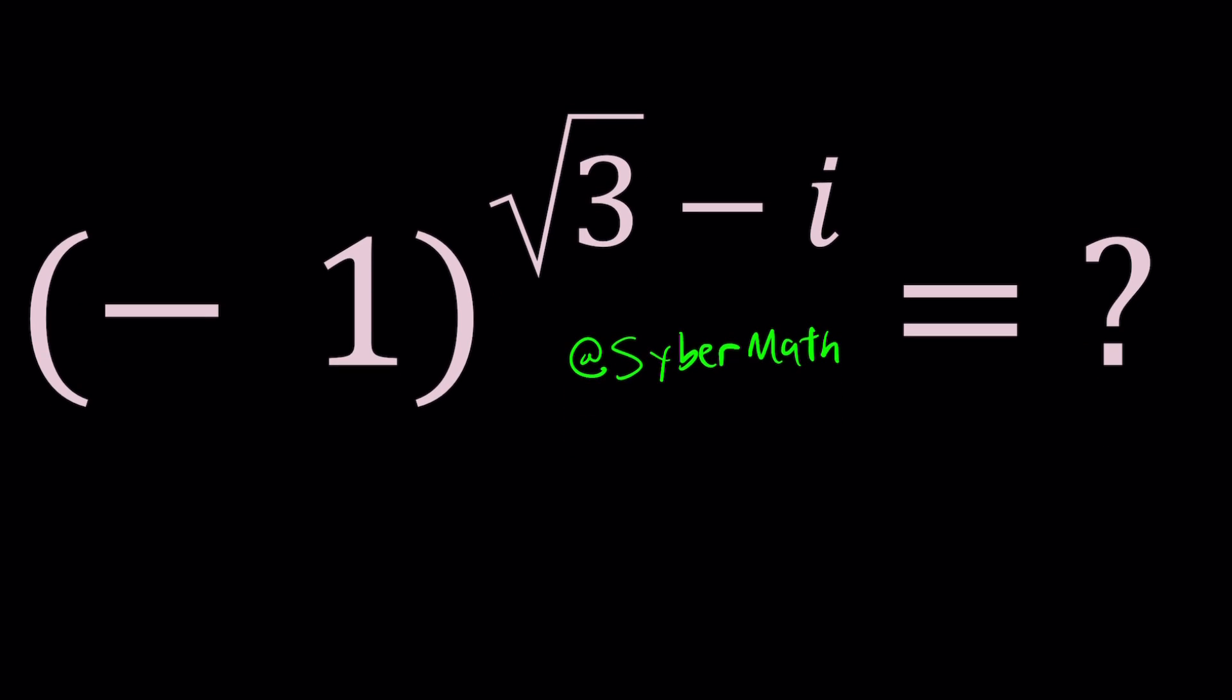Normally in the real world if you raise negative one to a power you either get one or negative one. Why? Think about it. If you raise negative one to the power three it's negative one because three is odd. If you raise negative one to the second power that becomes positive one because if you multiply two negatives it's a positive.